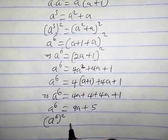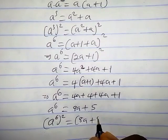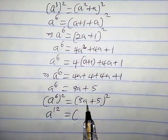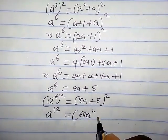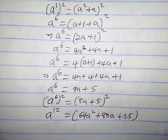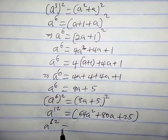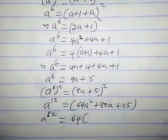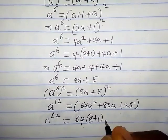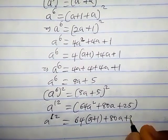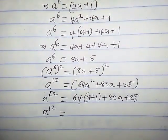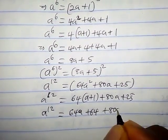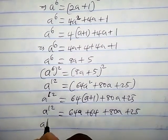Squaring both sides again, a raised to the six squared equals eight a plus five, all squared. By exponent laws, a raised to the 12 equals 64 a squared plus 80 a plus 25. Substituting a squared equals a plus one, we have 64 times a plus one, plus 80 a plus 25.